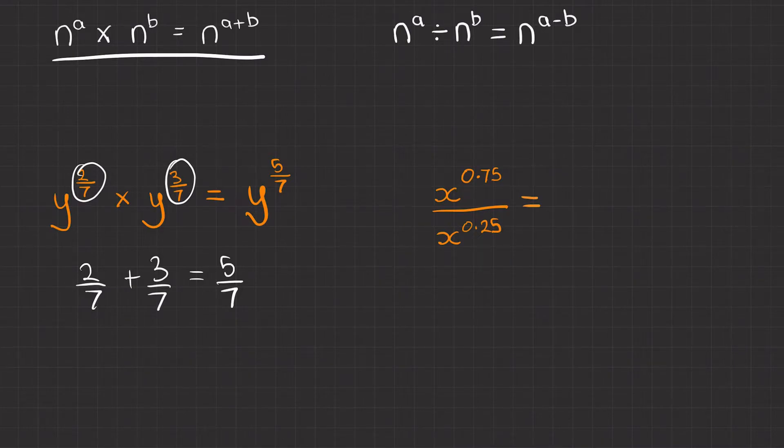For the second question, we've got x to the power of 0.75 divided by x to the power of 0.25. We know it's going to be x to the power of something.